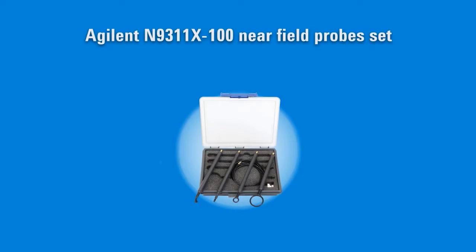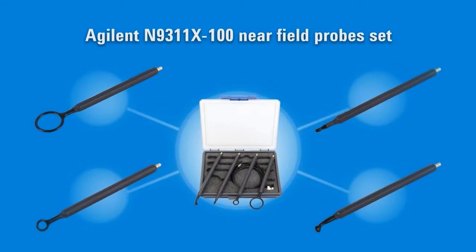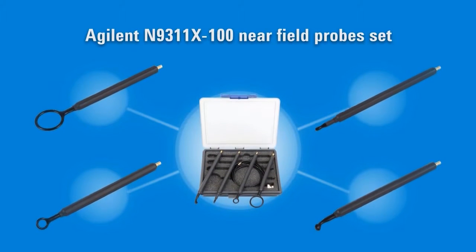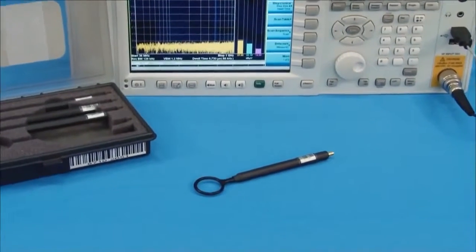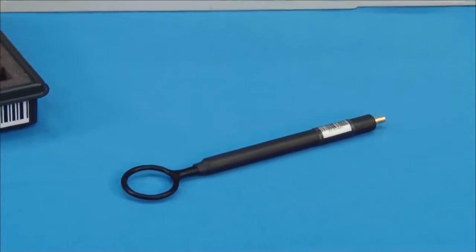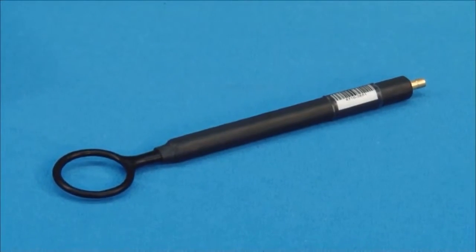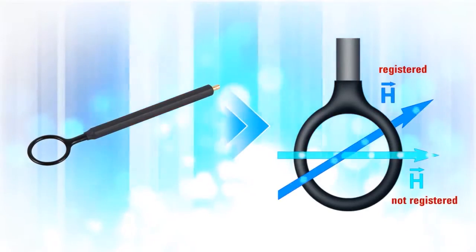Today we are using an Agilent N9311X100 near-field probe set. You can see there are four probes in the N9311X100 set — they are all H-field probes. Probe number one has the largest diameter. It is the most sensitive and therefore has the lowest resolution. It can be used at distances up to 10 cm from the unit under test.